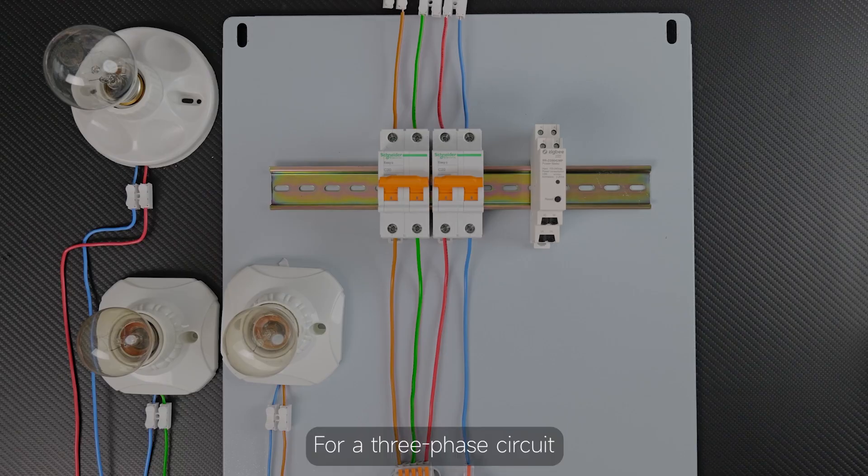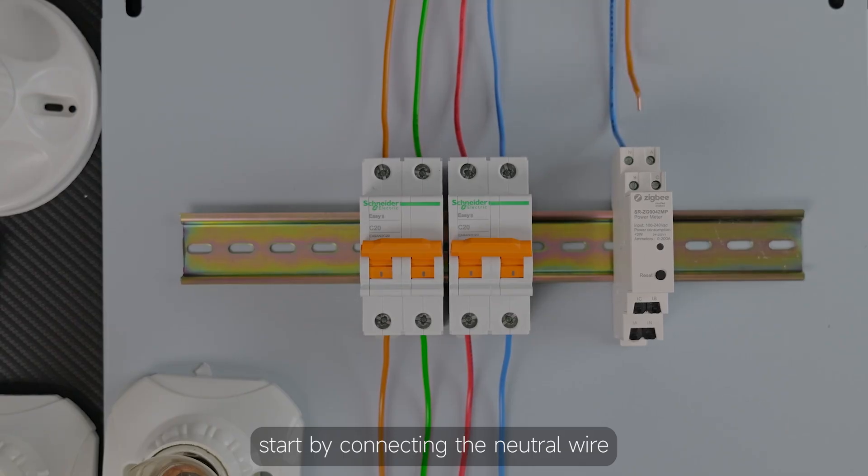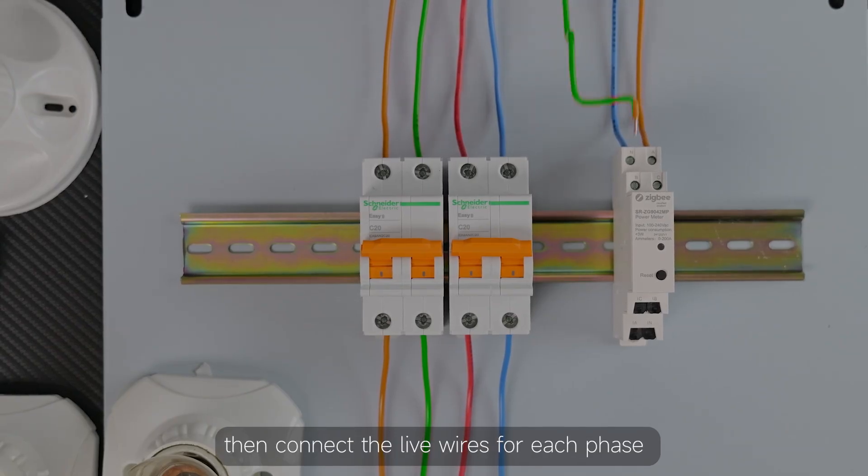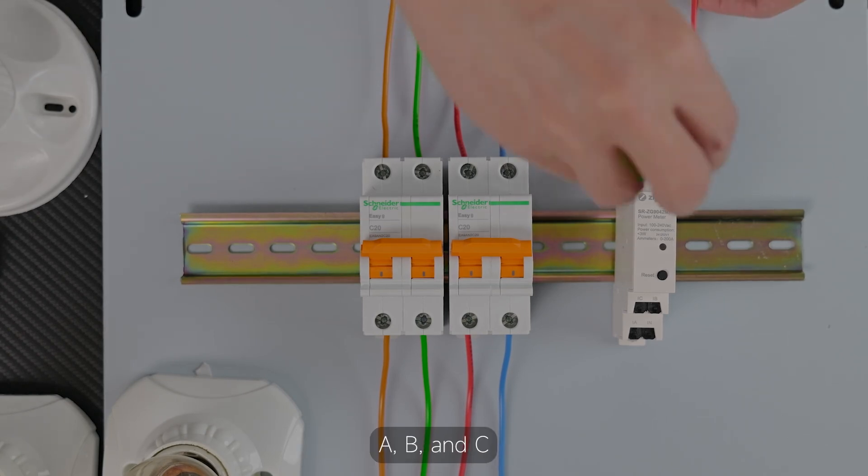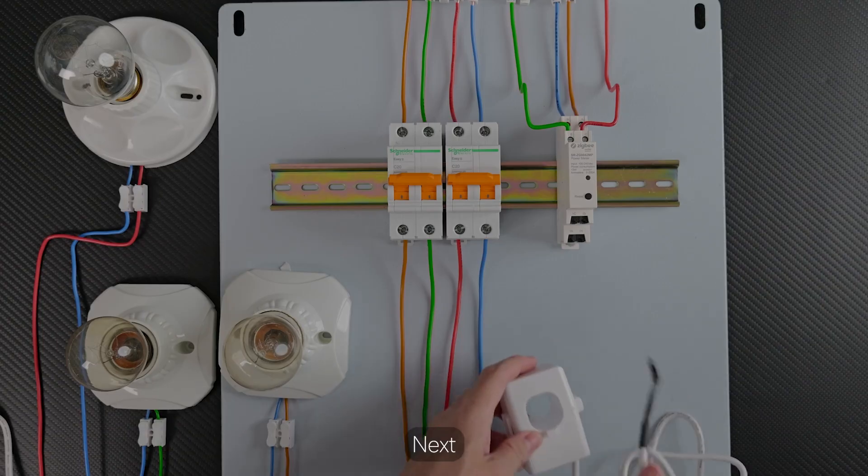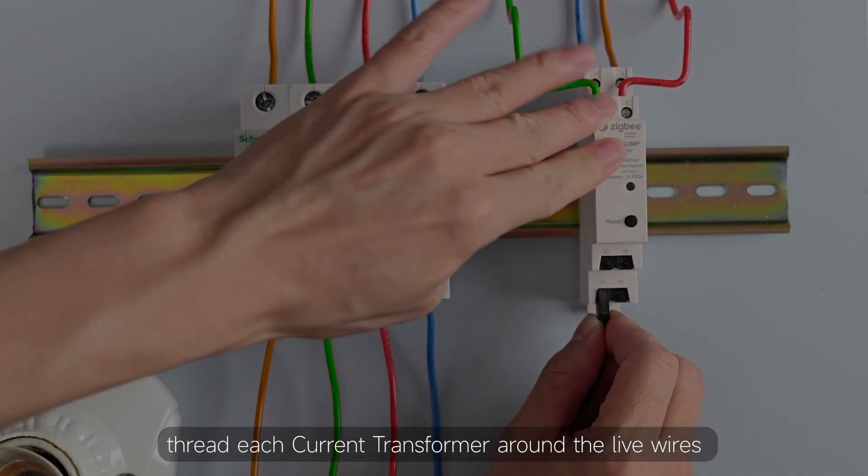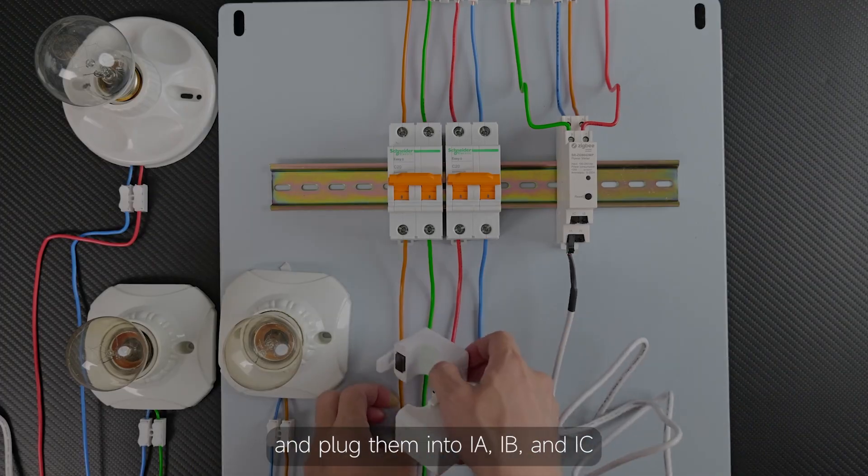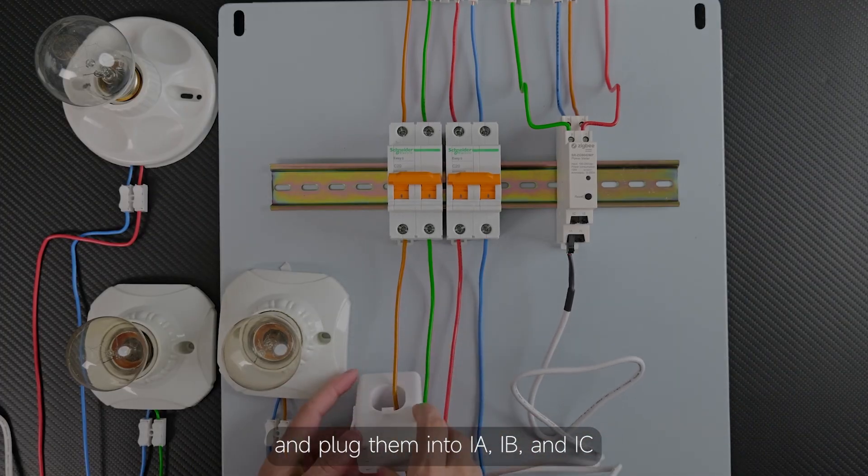For a three-phase circuit, start by connecting the neutral wire, then connect the live wires for each phase to the corresponding ports A, B, and C. Next thread each current transformer around the live wires and plug them into IA, IB, and IC.